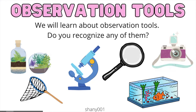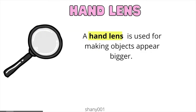We will learn about observation tools. Do you recognize any of them? Go ahead and pause the video. Hand lens. A hand lens is used for making objects appear bigger.